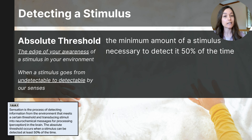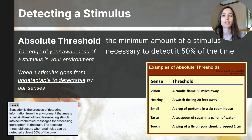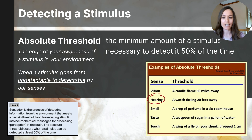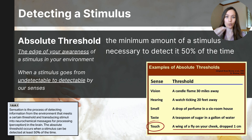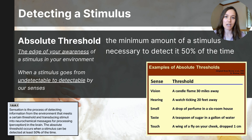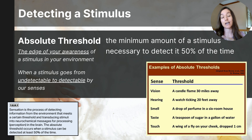The absolute threshold marks the point at which a stimulus goes from undetectable to detectable, highlighting the minimum intensity required to perceive a sensation. Everyone's absolute threshold is different, but for the average person in a completely controlled environment, the absolute threshold for detecting a light in darkness is 30 miles away. The faintest sound is the ticking of a watch from about 20 feet away in complete silence. The lightest touch is roughly the weight of a bee's wing falling onto your cheek from one centimeter. Anything fainter than that would not be detected 50% of the time. We don't need to detect everything — we just need a low enough absolute threshold to detect important signals of tastes, textures, and smells.